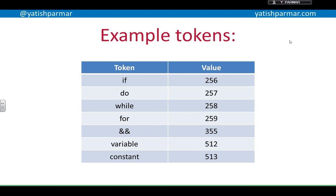Here are some example tokens in my hypothetical language: 'if' has been given a value of 256, 'do' a value of 257, 'while' 258, and so on. My variables and constants have got token values of 512 and 513. Bear in mind that I'll be replacing them with binary, not with the denary numbers you can see in front of you.